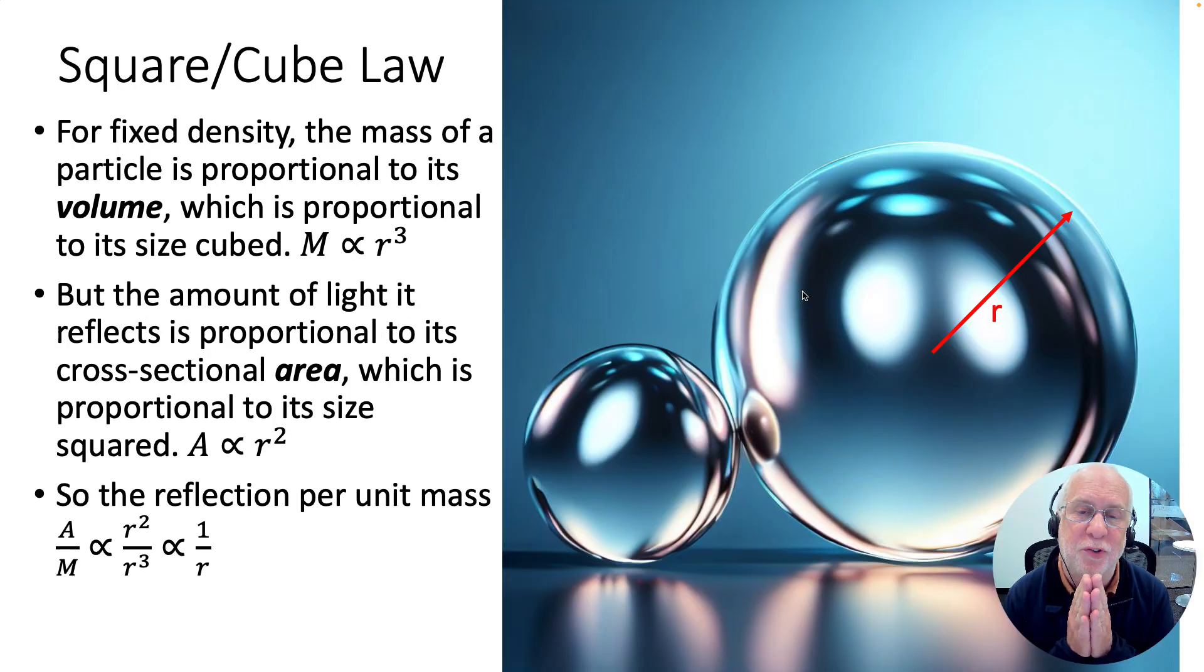Now this is an example of the square-cube law. Let's imagine you have some particles of different sizes and they've got some size r, which might be a radius or a diameter or a circumference, it doesn't matter, it's a size. Now the mass of the particles is proportional to its volume, if we assume they've all got the same density like raw water grains, in which case volume is proportional to length cubed. So for a sphere it's 4πr³, for a cube it would just be r³. But whatever shape it is, it's going to be proportional to the mass, volume and the mass, to r³.